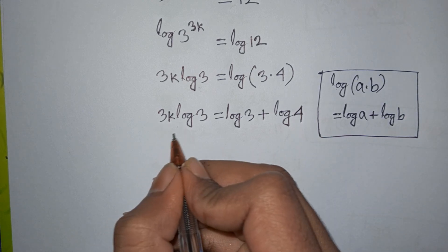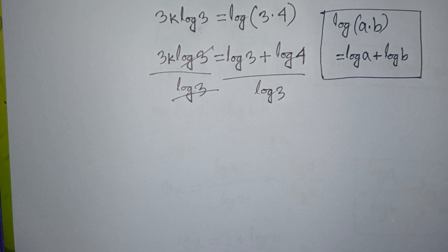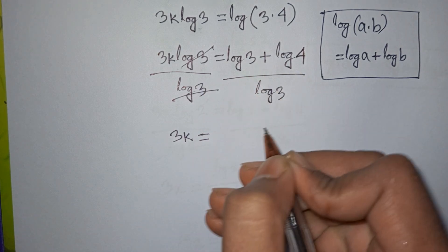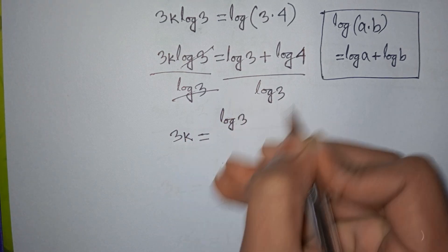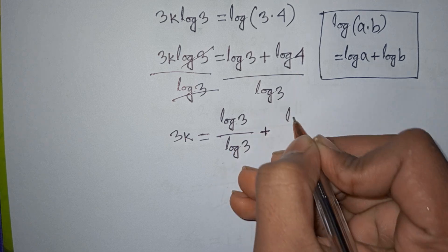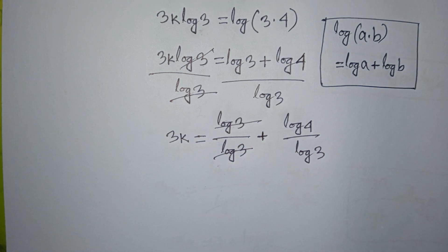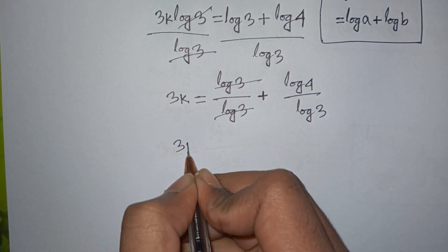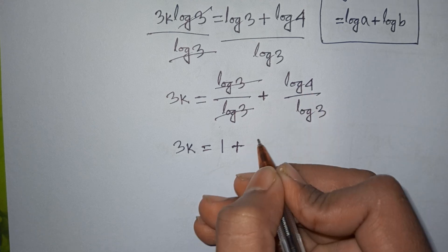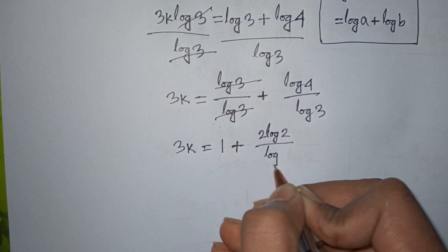Now we need the value of k, so we divide both sides by log(3). The log(3) on the left cancels, giving us 3k equals log(3)/log(3) plus log(4)/log(3), which simplifies to 1 plus log(4)/log(3). Since log(4) equals 2·log(2), we get 3k equals 1 plus 2·log(2)/log(3).